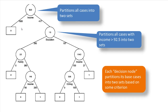So after two divisions, we've got three different partitions, and so on. Every time you partition one of the groups, you're going to have one more new group created. Each decision node or interior node partitions its base cases — that is, the cases that apply to that particular node — into two different sets. For example, this node partitioned the 417 into 260 and 157, which adds up to 417.